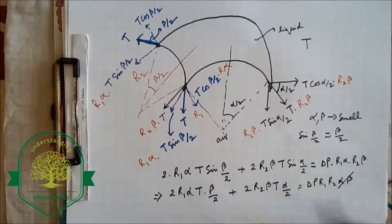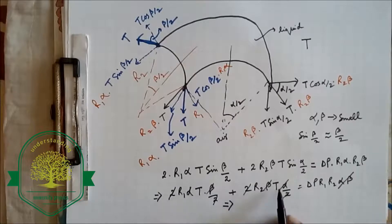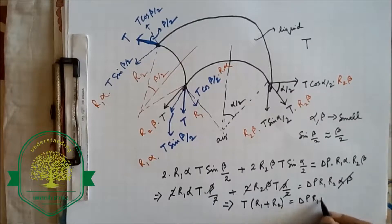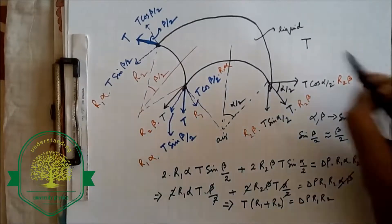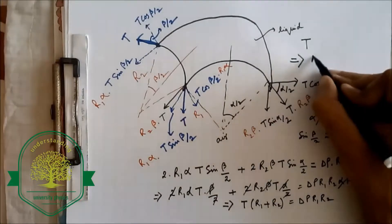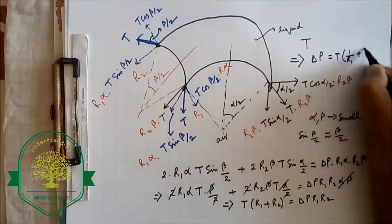Since alpha and beta are small, sin(β/2) ≈ β/2 and sin(α/2) ≈ α/2. This gives 2·R1·α·T·(β/2) + 2·R2·β·T·(α/2) = ΔP·R1·R2·α·β. The factor α·β is common to all terms and cancels, as do the factors of 2, leaving R1·T + R2·T = ΔP·R1·R2. Taking T common: T(R1 + R2) = ΔP·R1·R2, so the final answer is ΔP = T × (1/R1 + 1/R2).